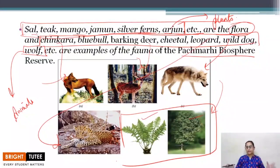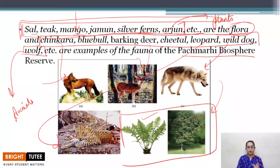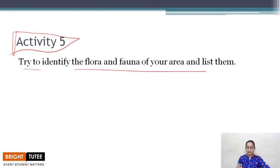To clarify: in an area, if a kind of tree is present in Panchmarhi reserve, it will be called the flora of that area. It is not essential that it be found only there — for example, mango trees are found in Panchmarhi but also in Uttar Pradesh. Flora counts all trees and fauna counts all animals of that area, regardless of whether they are found elsewhere. Activity: try to identify and list the flora and fauna of your own area — you can use Google.